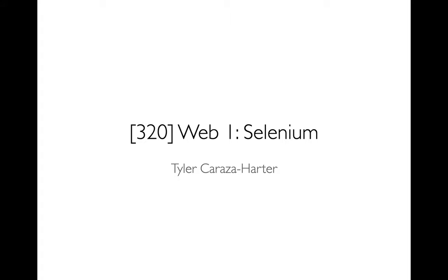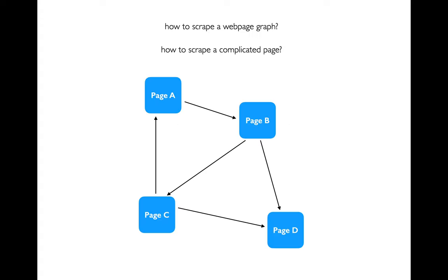We've been spending a bunch of time on graphs and we're going to move into a new topic now which is the internet. The internet we can really think of as one big graph. We have all these pages which we might imagine as nodes, and some pages linked to other pages, so we could imagine all of those edges being like hyperlinks. So here I have a hyperlink from page A to page B.